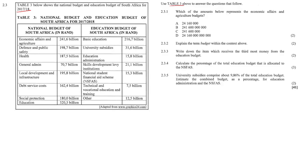The economic affairs and agriculture budget is 241.6 billion, so the answer is B. Just to clarify place values: that figure represents billions, then millions, hundred thousands, and thousands. 24 trillion would have even more digits — just in case you see something like that with that many figures: trillions, billions, millions, hundred thousands.